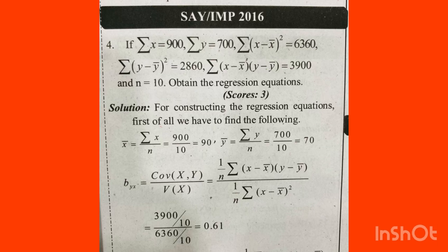We also need byx and bxy. Now, x̄ equals sigma x divided by n, and ȳ equals sigma y divided by n. If you learn the theory portions, it will be very neat and clear.